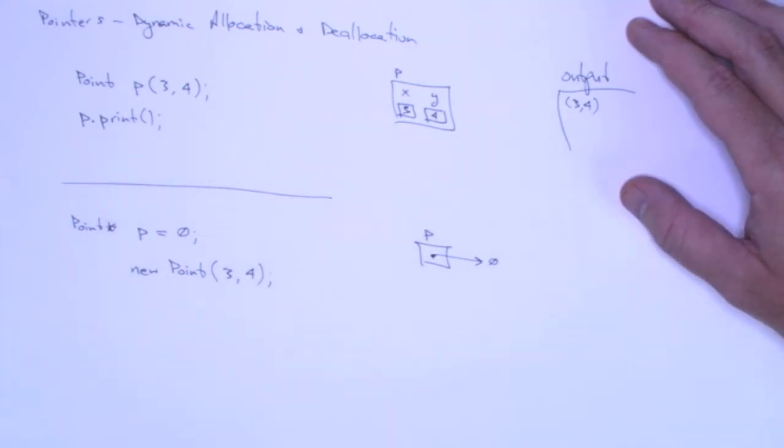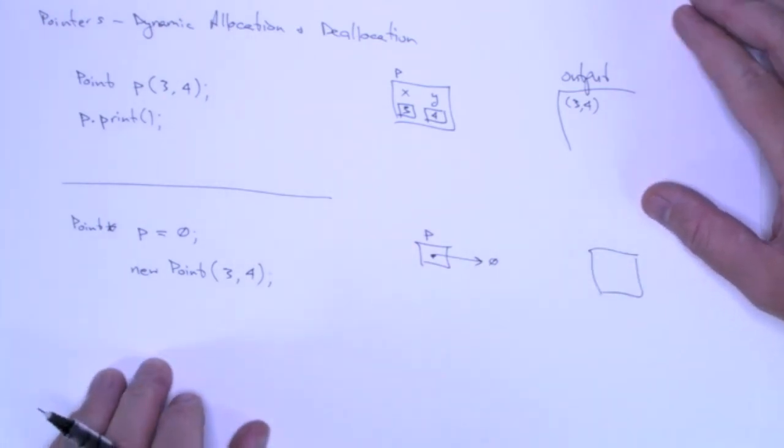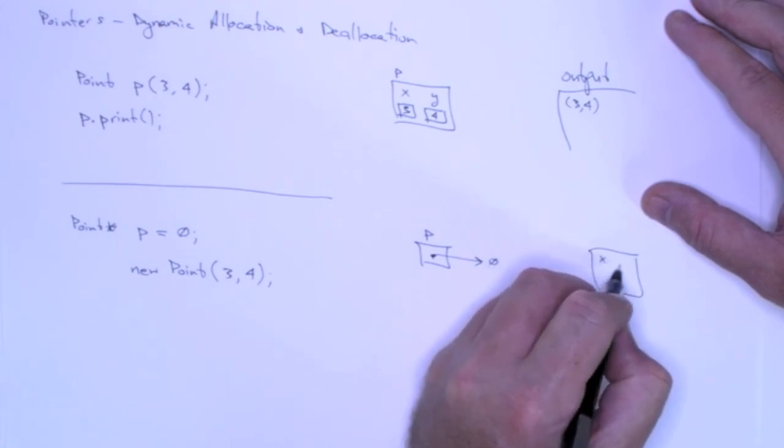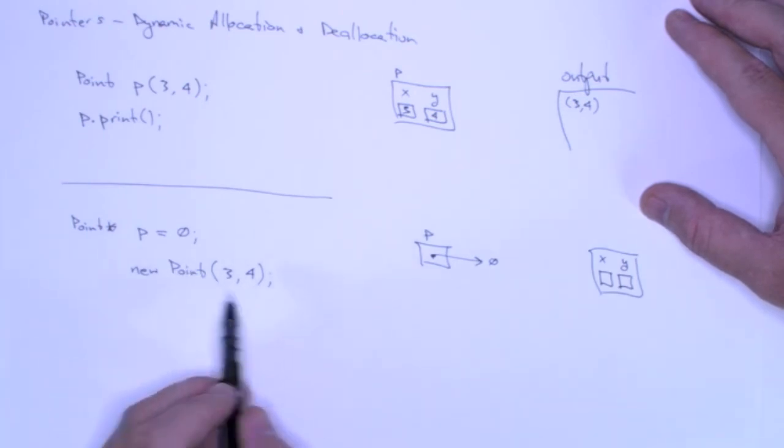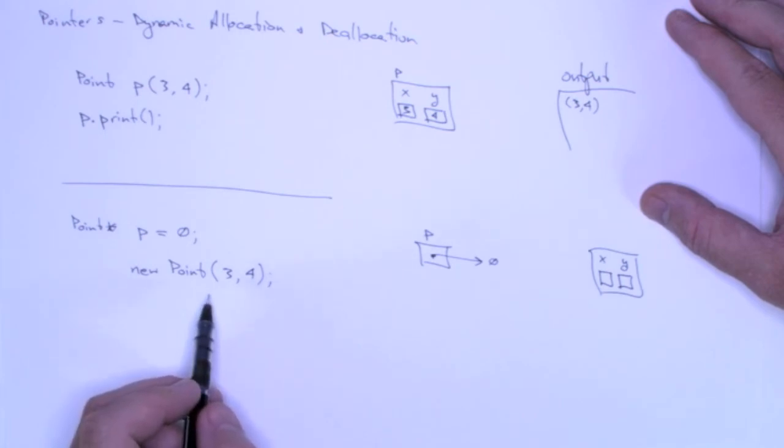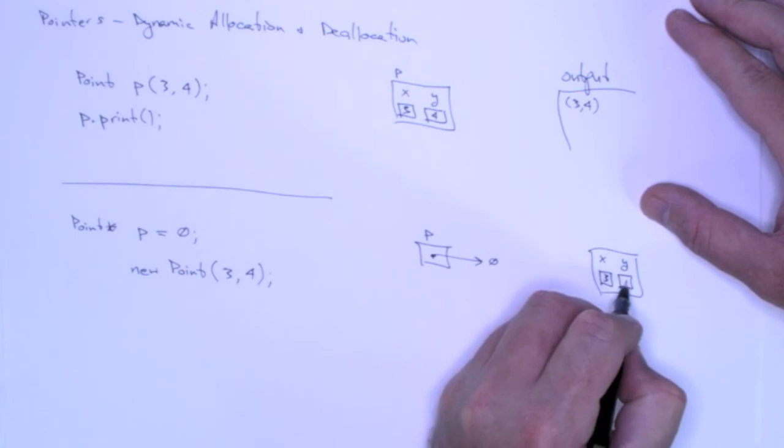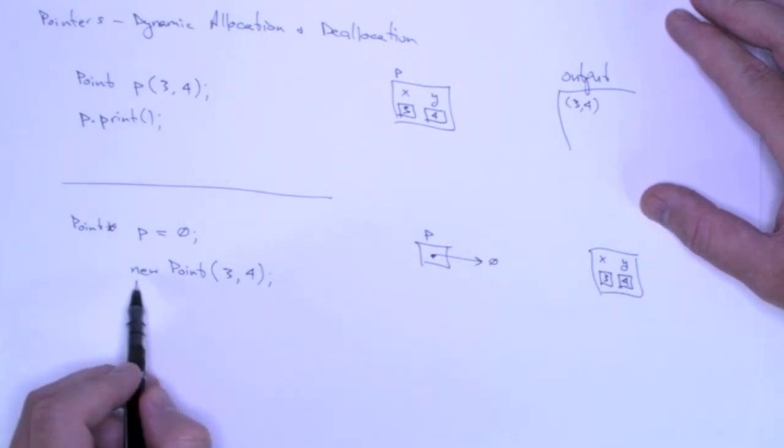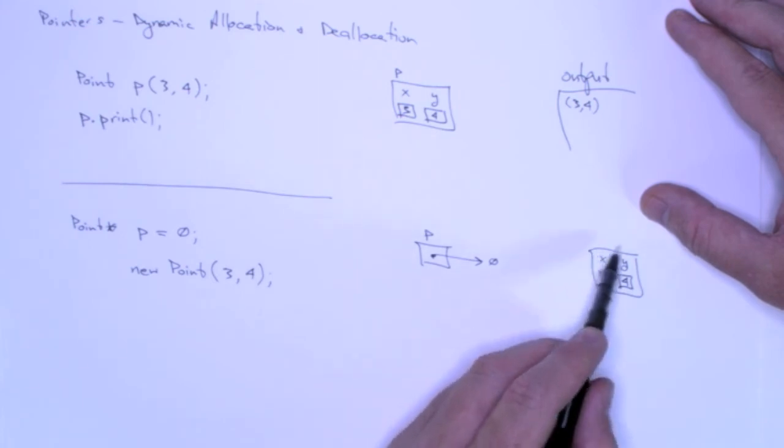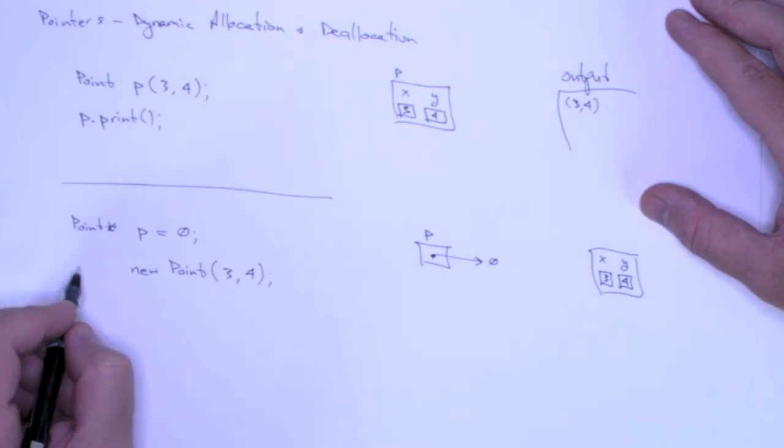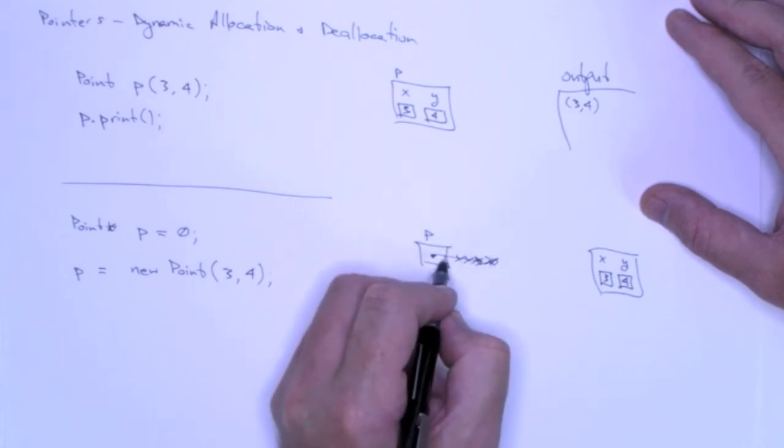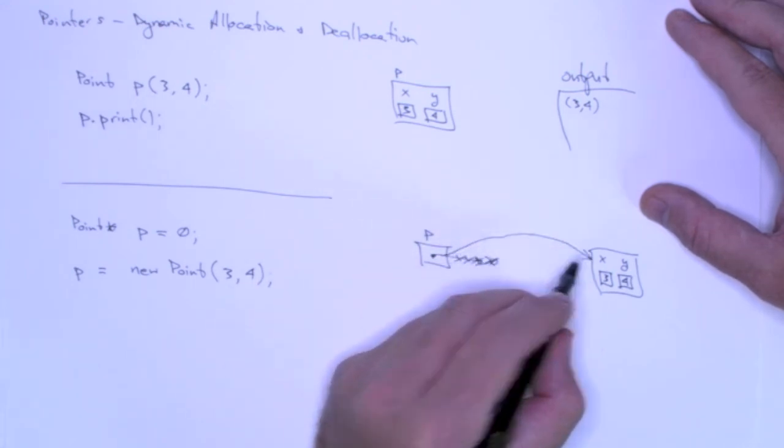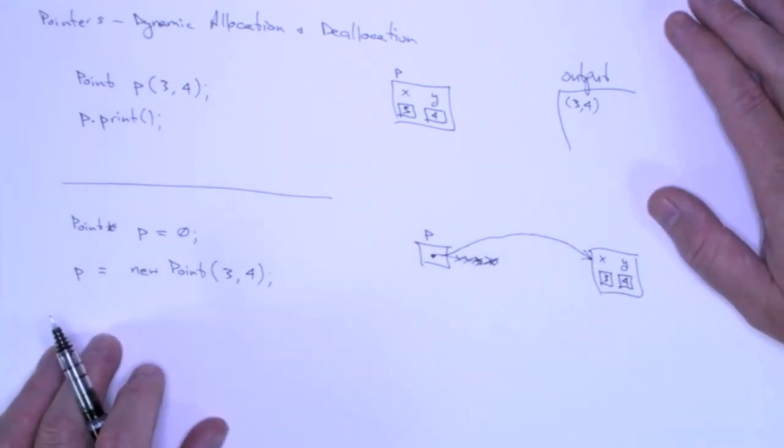What new is going to do is it's going to go out into memory. It's going to allocate space for a point object. It will also allocate space for its private data members, in this case x and y. Then it passes the parameters to the constructor that I've called. The constructor executes. And this constructor makes the assignments to the private data member. Then the new operator returns the address of where that object resides in memory. And I can use that in an assignment. And I can make p point to this new dynamically allocated point object. And once that assignment happens, my pointer p will point to this dynamically allocated point object in memory.